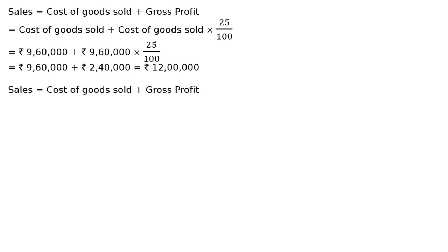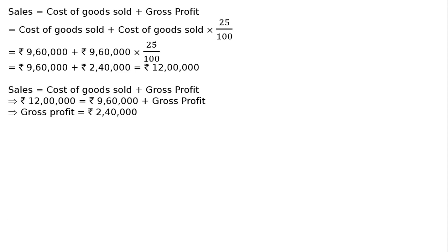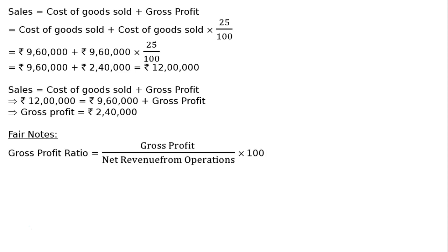Sales equals cost of goods sold plus gross profit. Since sales is Rs. 12,00,000 and cost of goods sold is Rs. 9,60,000, gross profit equals Rs. 2,40,000. We now have both gross profit and sales, so we can find the gross profit ratio. Gross profit ratio equals gross profit upon net revenue from operations into 100, that is Rs. 2,40,000 upon Rs. 12,00,000 into 100, which equals 20%.